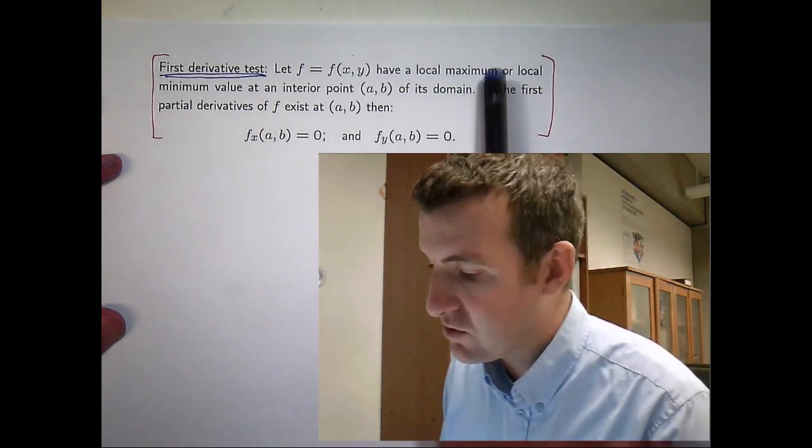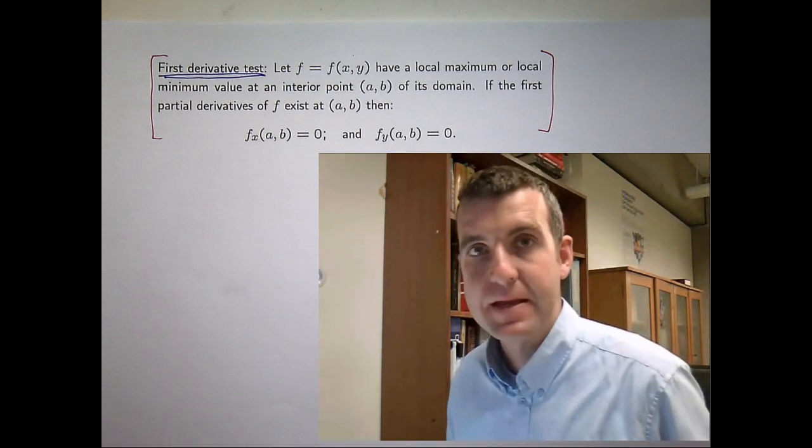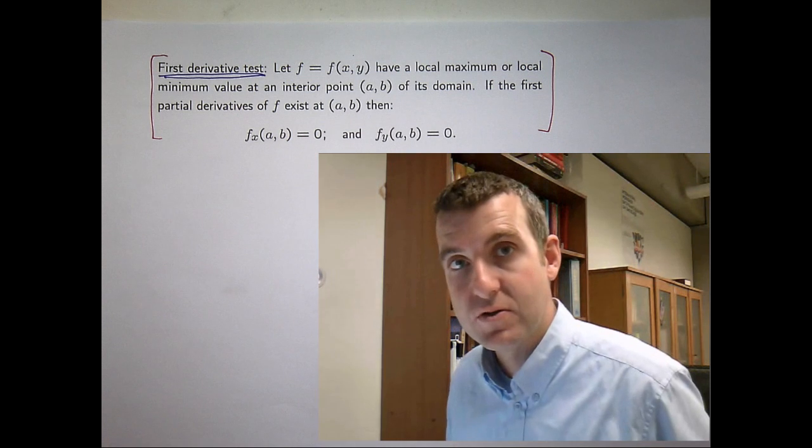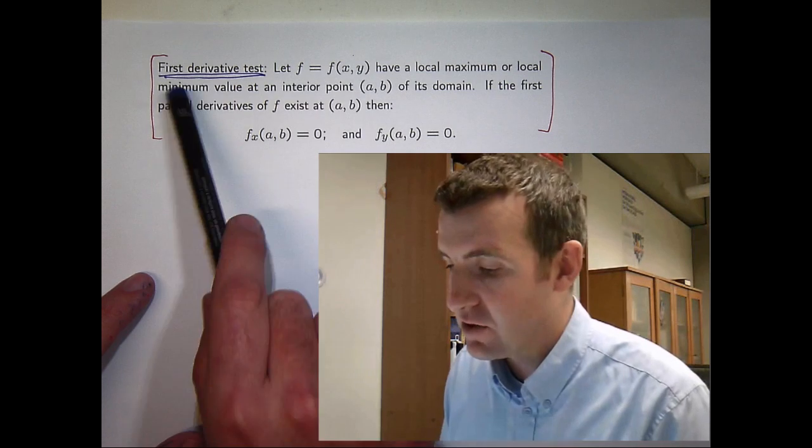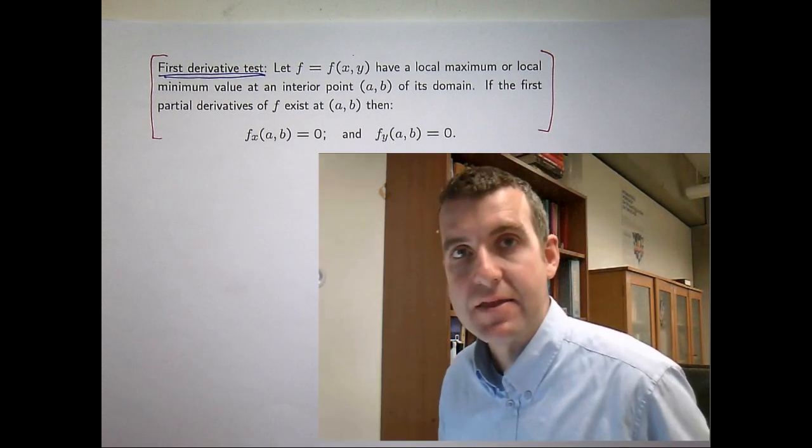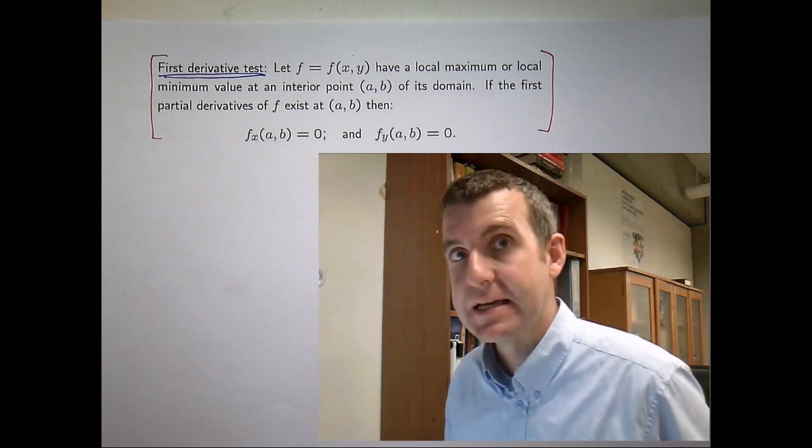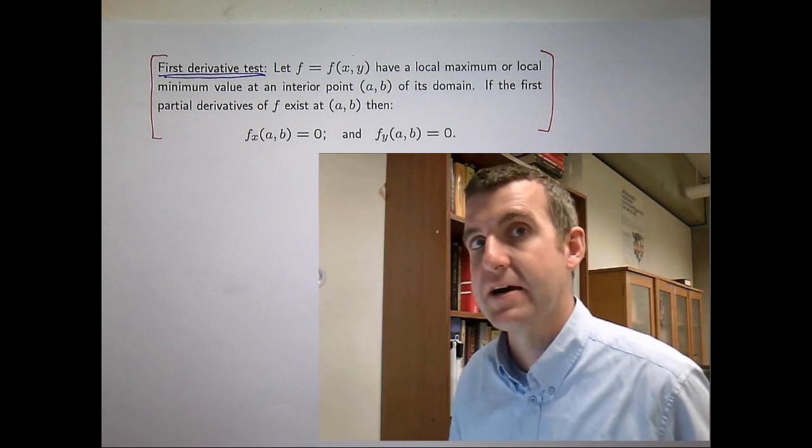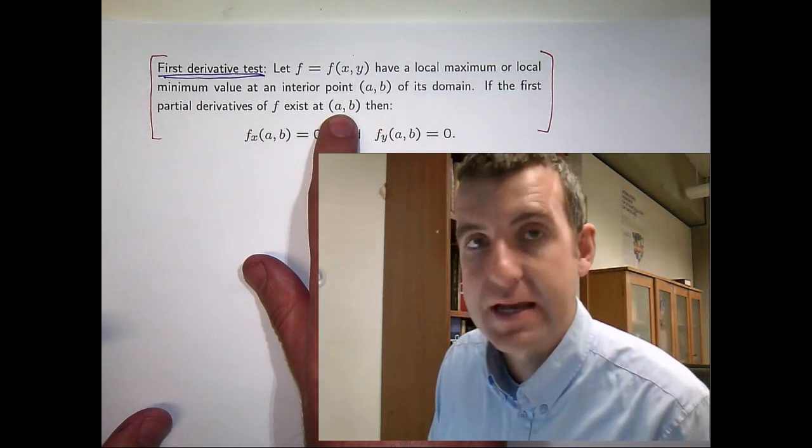First of all by local maximum we mean that f(a, b) is greater than or equal to all the other values of f near the point (a, b). And by local minimum we mean the value of f at (a, b), f(a, b) is less than or equal to all the other values nearby to the point (a, b).